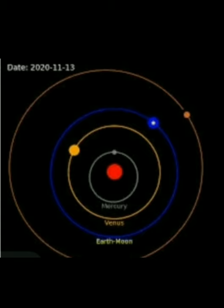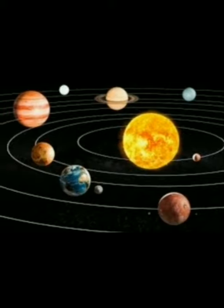The orbit is the path where every planet rotates. The Earth also has its own orbit. The planets are non-luminous bodies. Non-luminous bodies means the planets which do not emit their own light. That is called non-luminous planets.